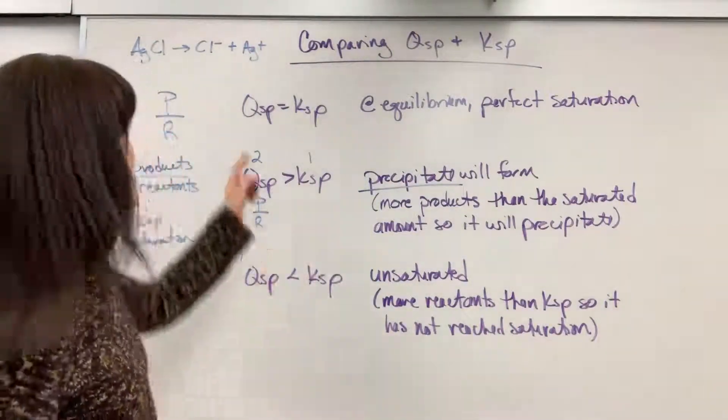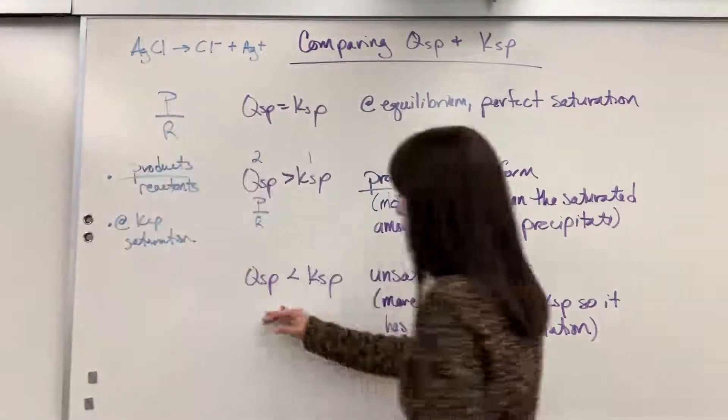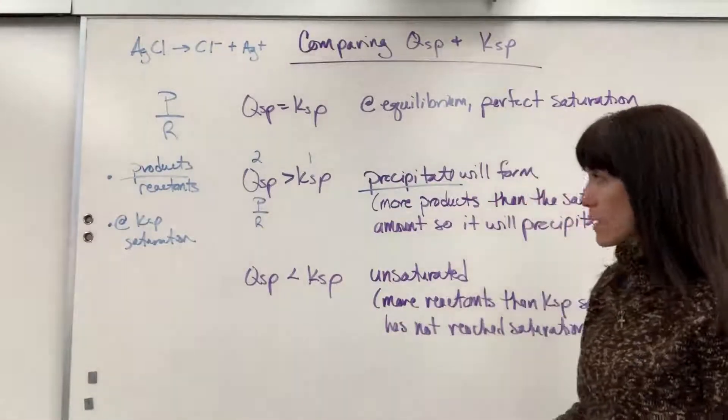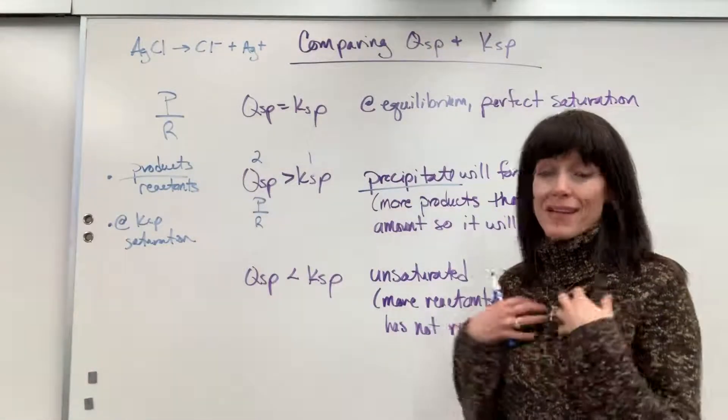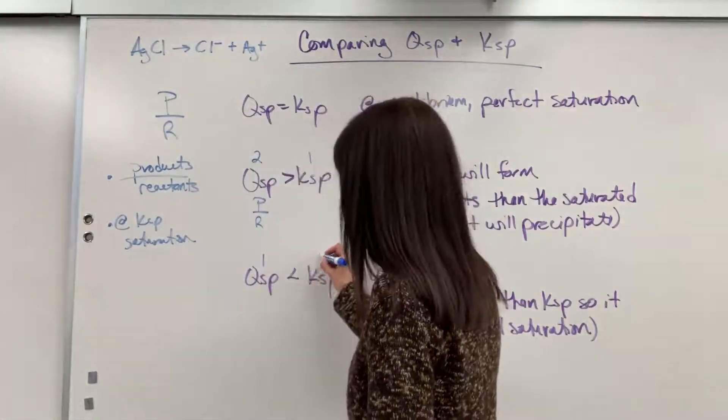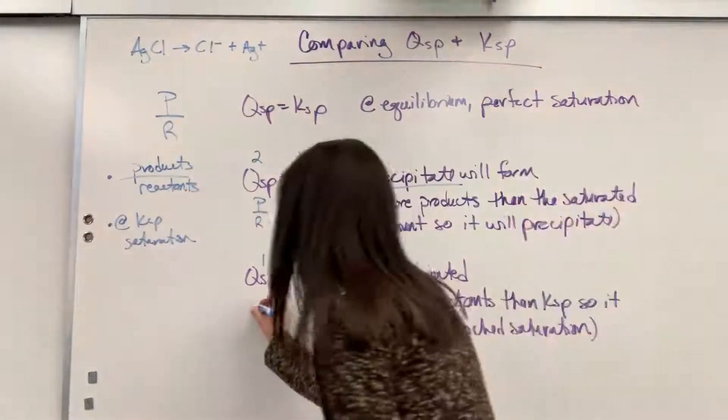So you can't have any more products than the saturated amount than the KSP amount. Okay. Let's take a look at this scenario. Let's say that QSP is less than KSP. Let's put in numbers again. And literally, this is what I do. I'm going to say, all right, this is one because it's less than two. I use a one and a two. And then I go back to my ratio.